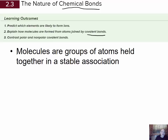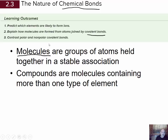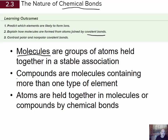We're going to start with molecules. Molecules are groups of atoms held together in a stable association. A compound — another term — these are molecules containing more than one type of element. That's the key: more than one type of element. Atoms are held together in molecules or compounds by chemical bonds.